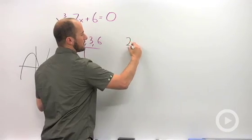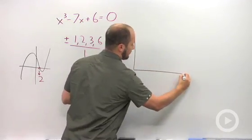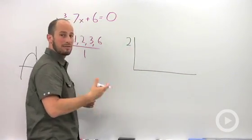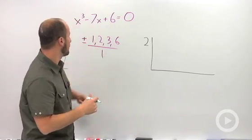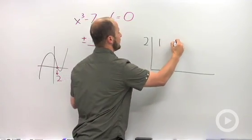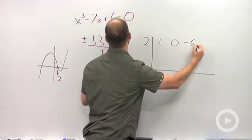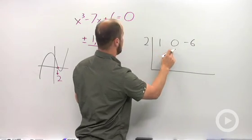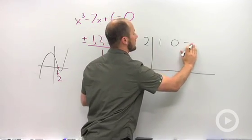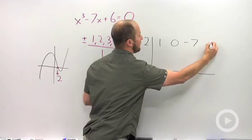So we do synthetic division with our number 2 and then making sure we write all the coefficients up. 1, 0, negative 6 and, oops, 1, 0, negative 7 and then positive 6.